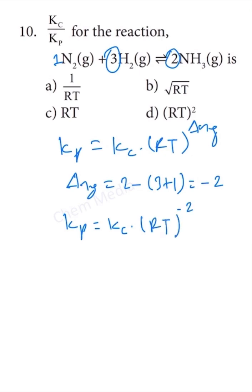If we divide by Kp on both sides, then 1 equals Kc by Kp times RT to the power of minus 2.